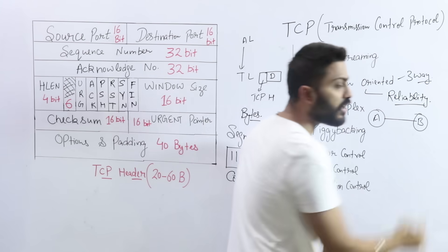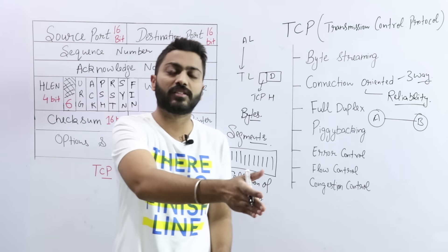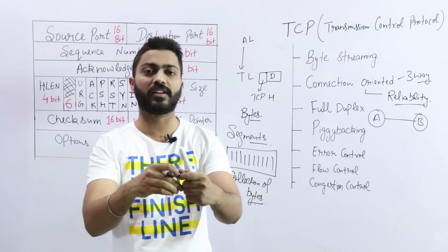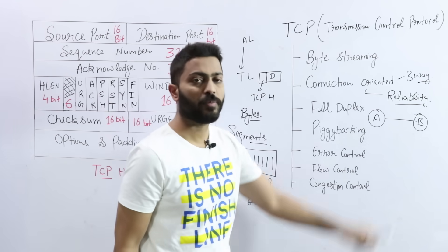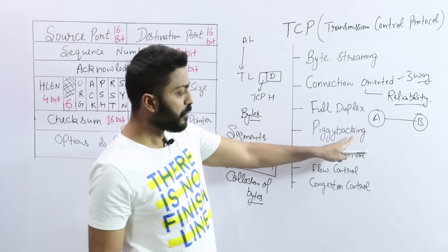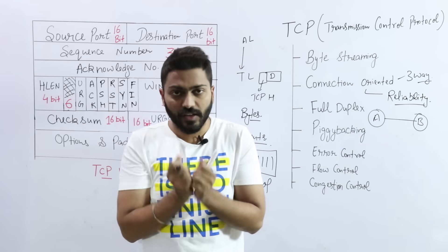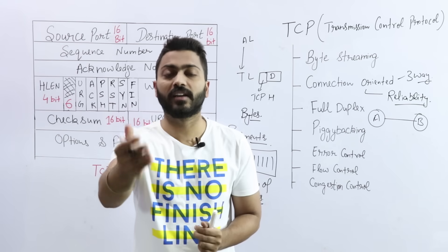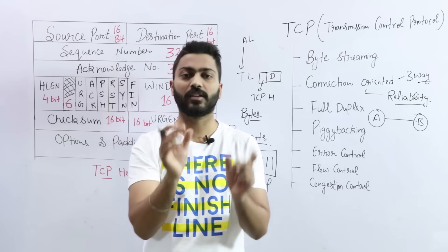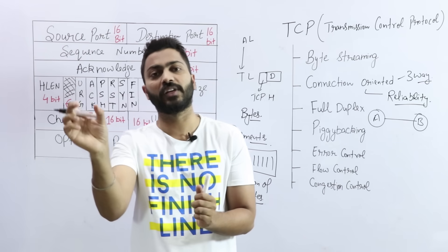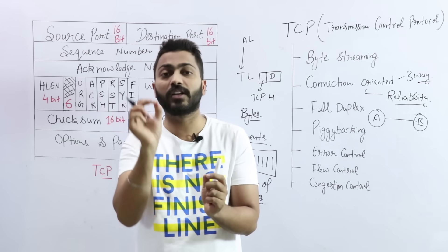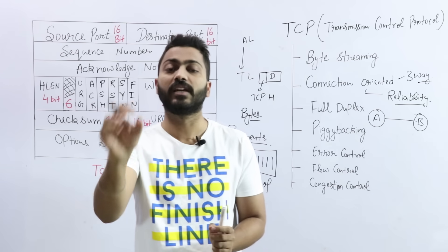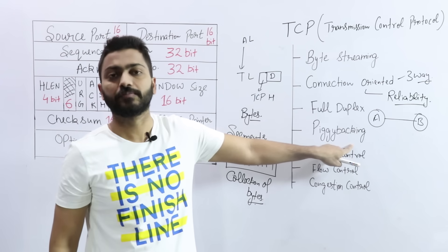That channel will work as a full duplex. So it is working as full duplex, both can transmit the data at the same time. This is called full duplex network. Next is piggybacking. What is piggybacking? Whenever we receive the data, we have to send the acknowledgement.